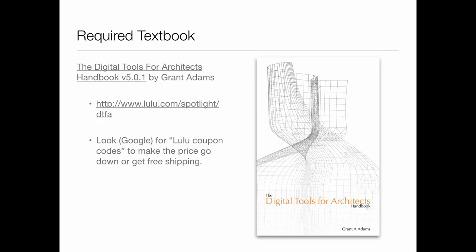There is a required textbook — the Digital Tools for Architects handbook. If you already bought it in 135, the same one works fine. It's a print-on-demand book from Lulu, so order it a few days in advance. You can search for Lulu coupon codes for a discount. It's useful because you can take notes directly in the step-by-step tutorials so you have your notes to go back to later. If you already have it from a previous semester, just use that — no need to buy it again.